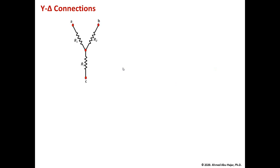Let's talk about the Y and the delta connections. You might have a load with what we call the Y shape. You have three resistors connected in what we call the Y connection. Looking at this connection, we can have three resistors — I call them R1, R2, R3 — and there are four nodes: three outer nodes and one center node.